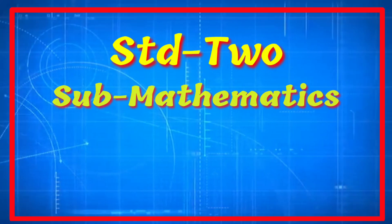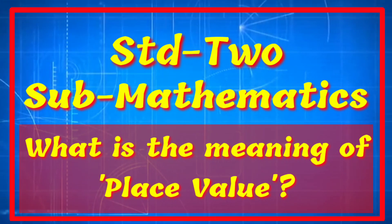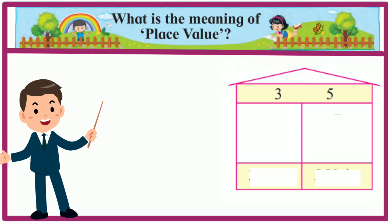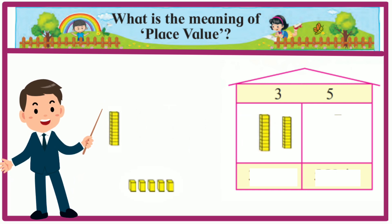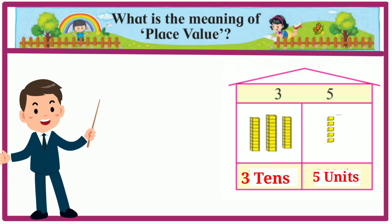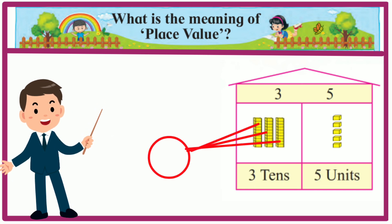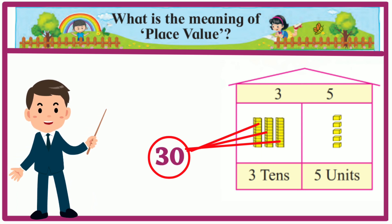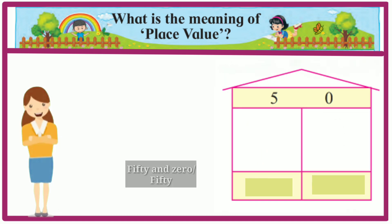This is standard 2 subject mathematics and today we are going to learn a new chapter: what is the meaning of place value. Let's see some examples to understand place value. In the number 35, we have 3 in the tens place. If we open 3 tens bundles we get 30 units. That is why the place value of 3 in the number 35 is 30. As 5 is in the units place, its place value is 5.